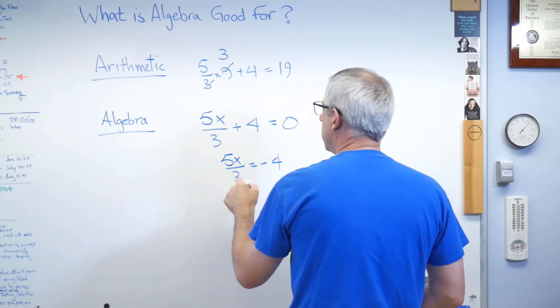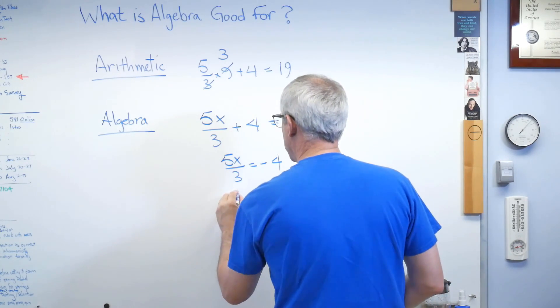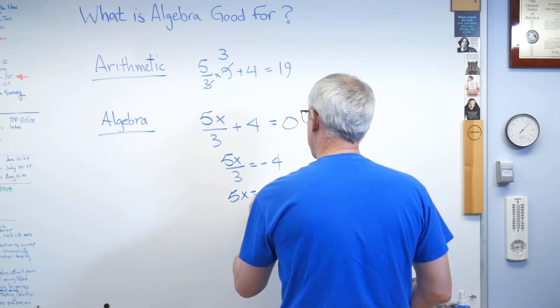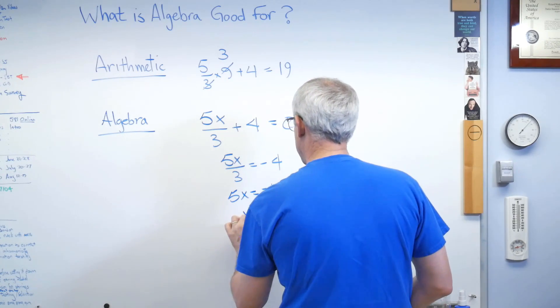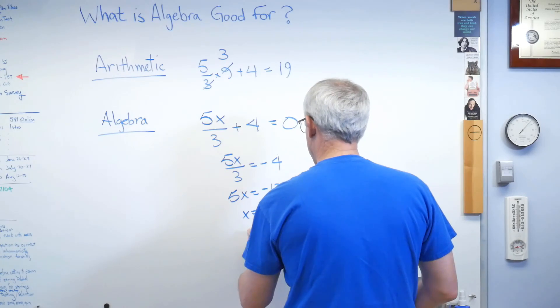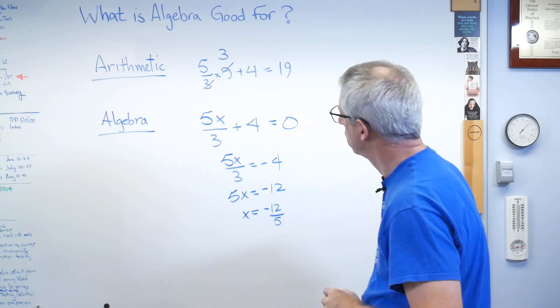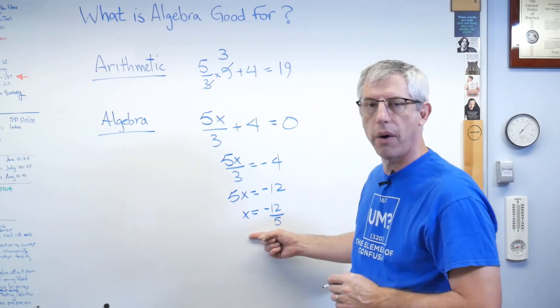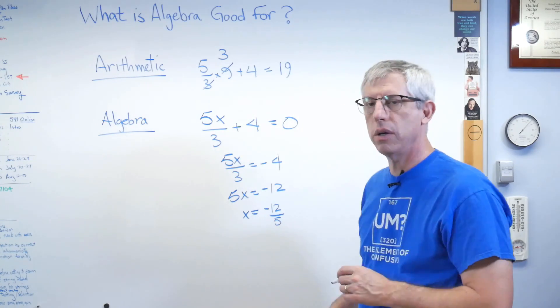x equals minus 4. Multiply through by 3. 5x is now minus 12. And let's see. x is now minus 12 over 5. Okay? Now I know what x is. I didn't before. Now I do.